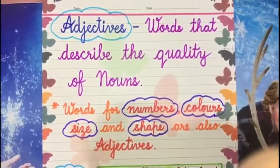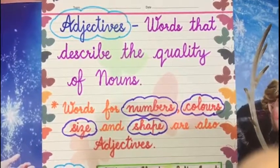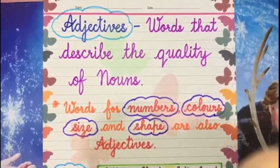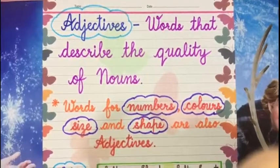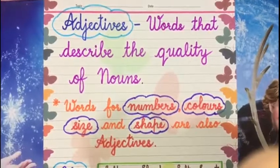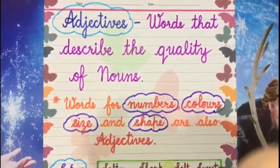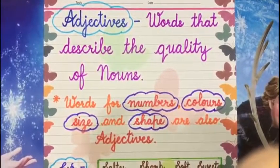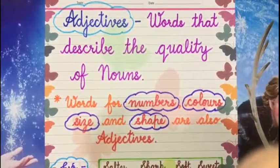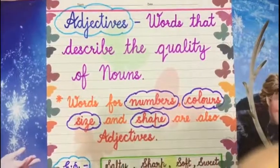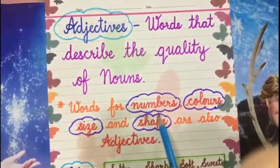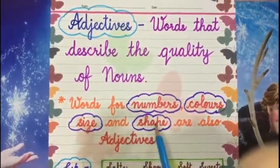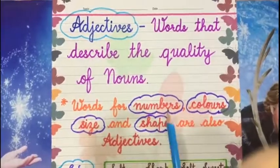What are adjectives? Adjectives are words that describe the quality of nouns. They help you know more about the nouns — what kind the noun is. Words for numbers, colors, size, and shape are also adjectives.